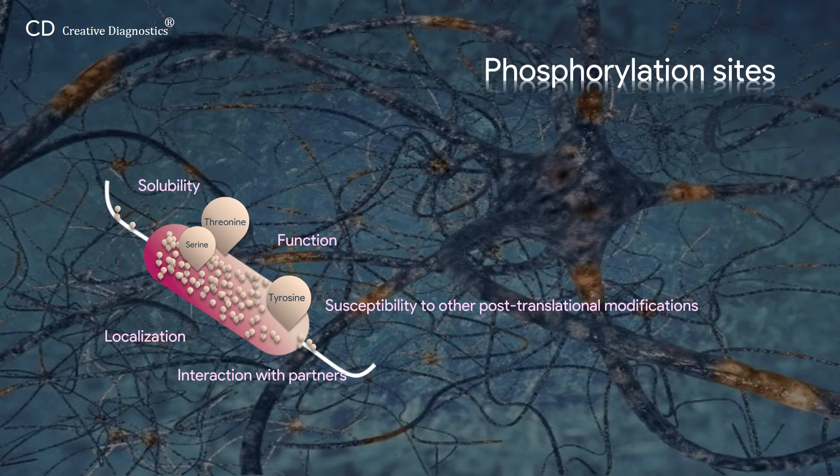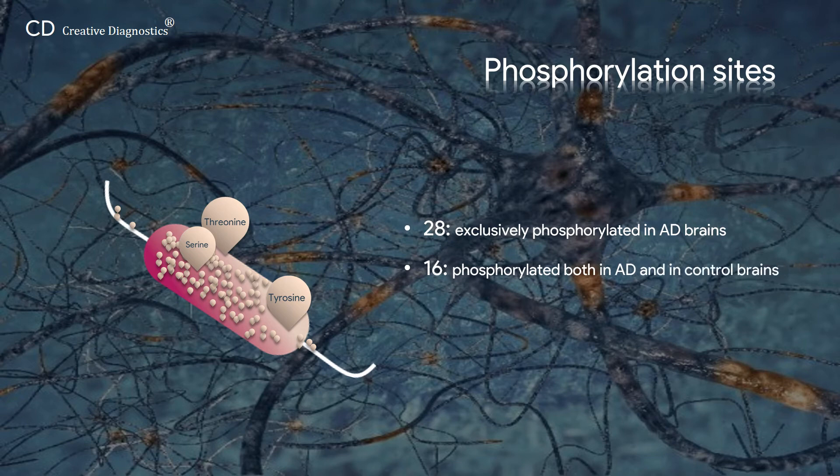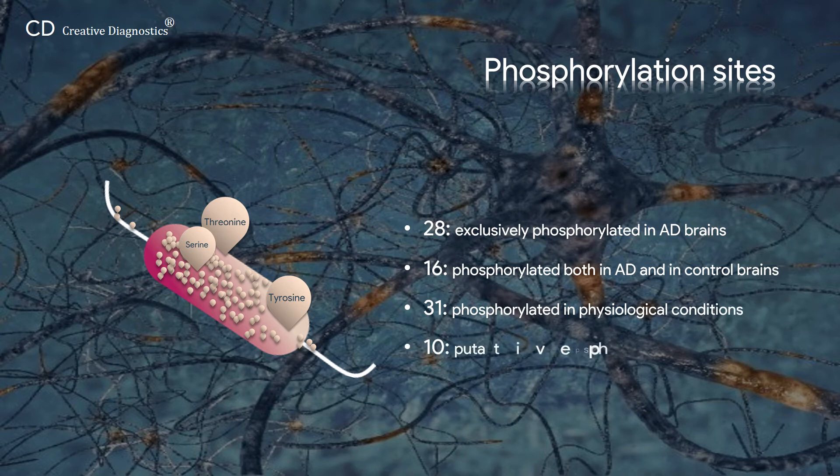Tau protein contains 85 putative serine, threonine, and tyrosine phosphorylation sites. Among which, 28 are exclusively phosphorylated in AD brains, 16 are phosphorylated both in AD and in control brains, 31 are phosphorylated in physiological conditions and 10 are Tau putative phosphorylation sites without an identified kinase.